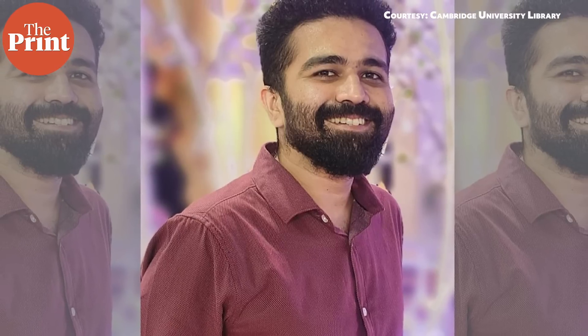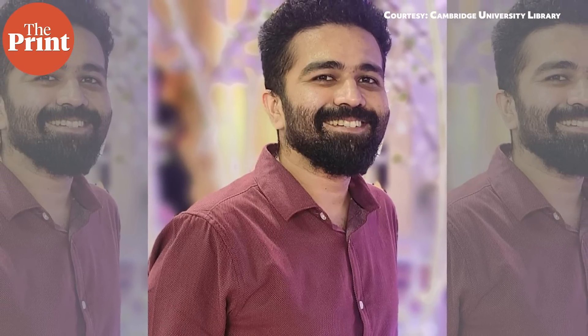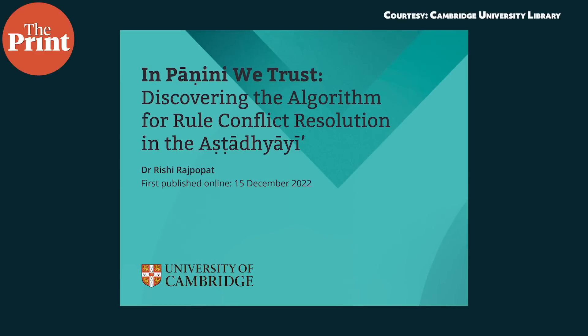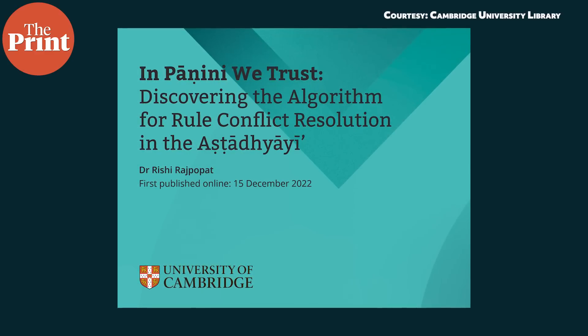Sanskrit studies through centuries have followed the format of one scholar building upon the work of the previous scholar — especially the immediate predecessor — not necessarily going back to the original canonical text. So this interpretation of 'para' meaning 'right hand side' was lost, until Rajgopat wrote his thesis on it. That is the problem he helped solve after 2,500 years.